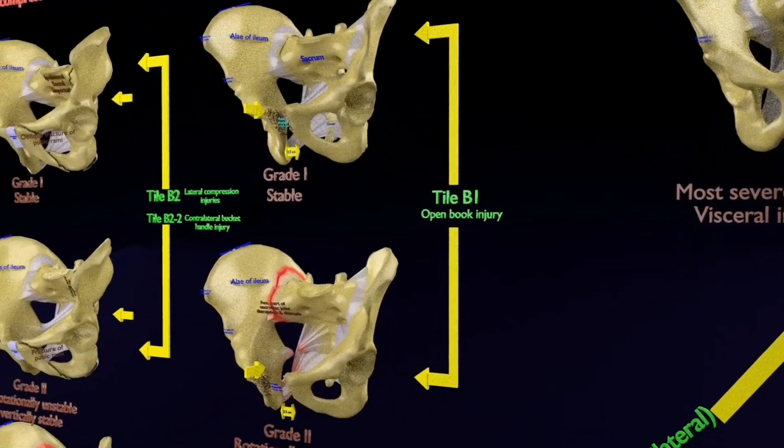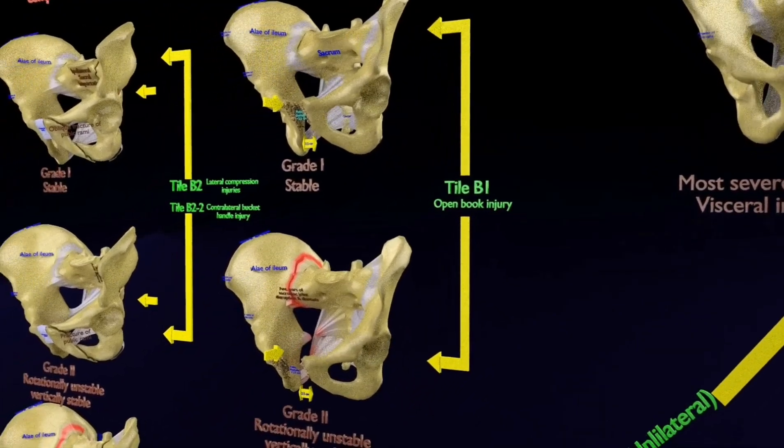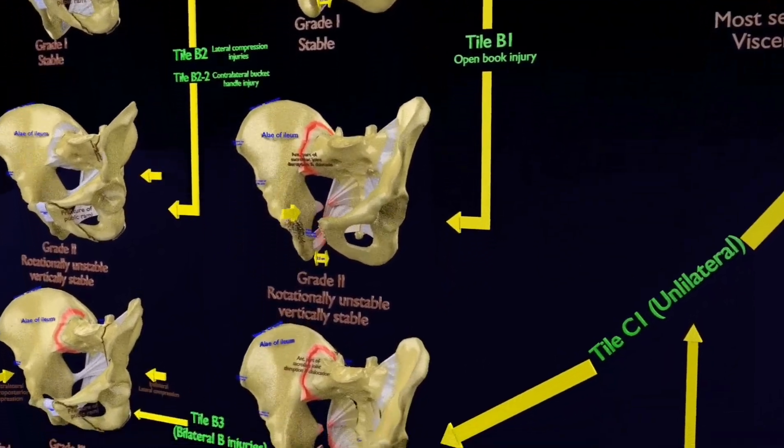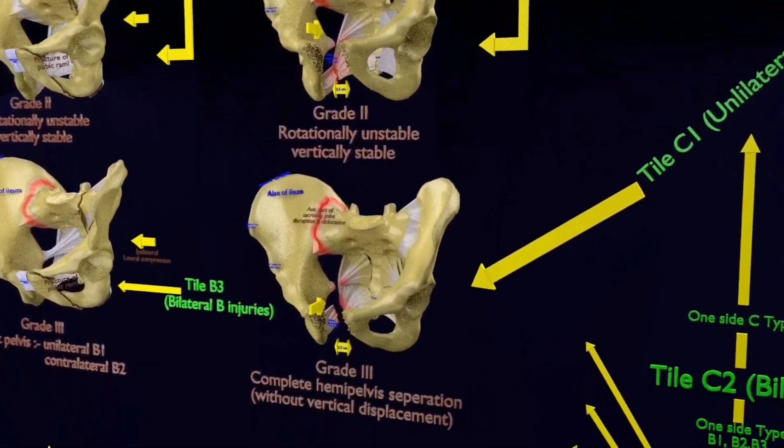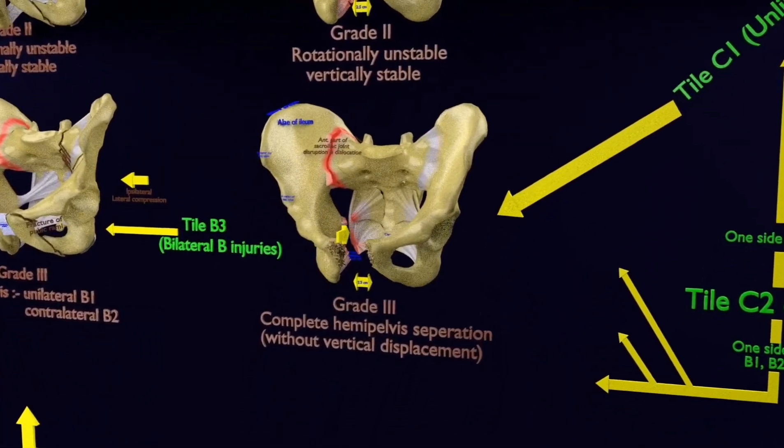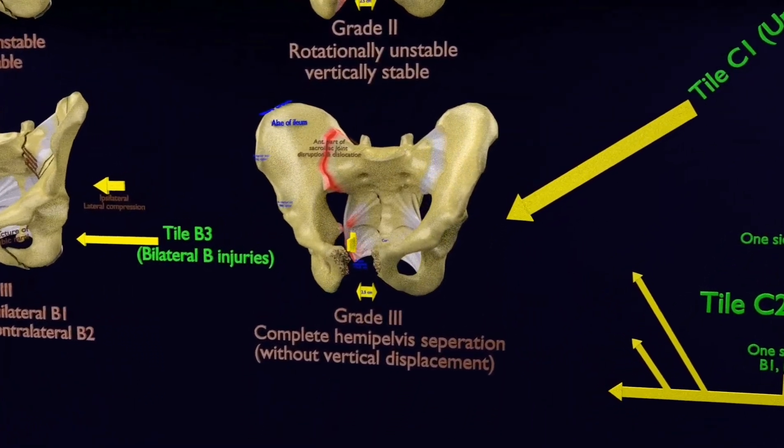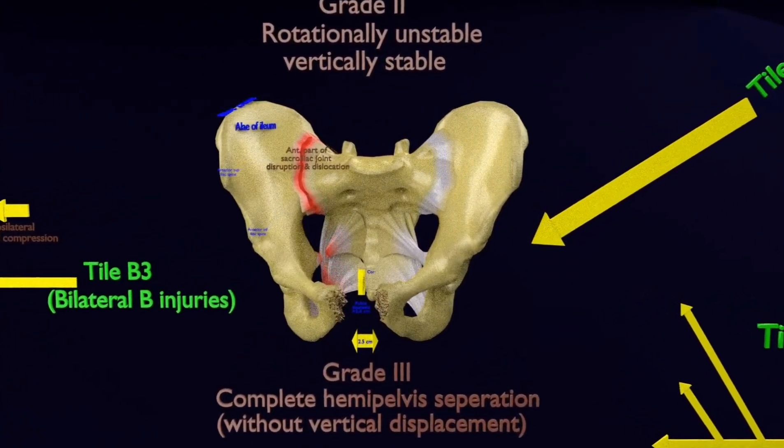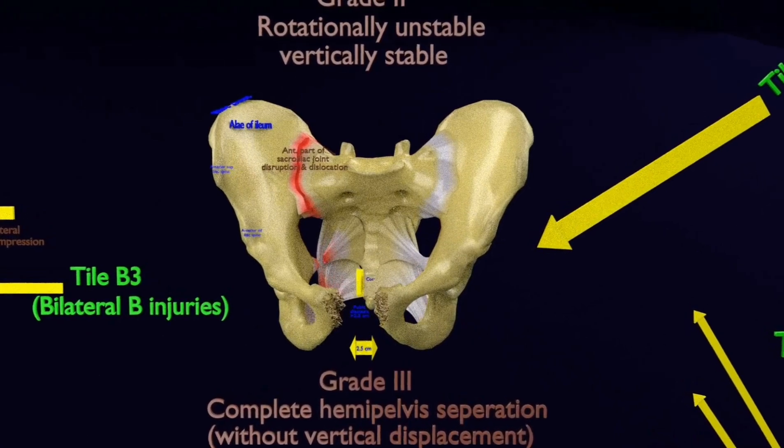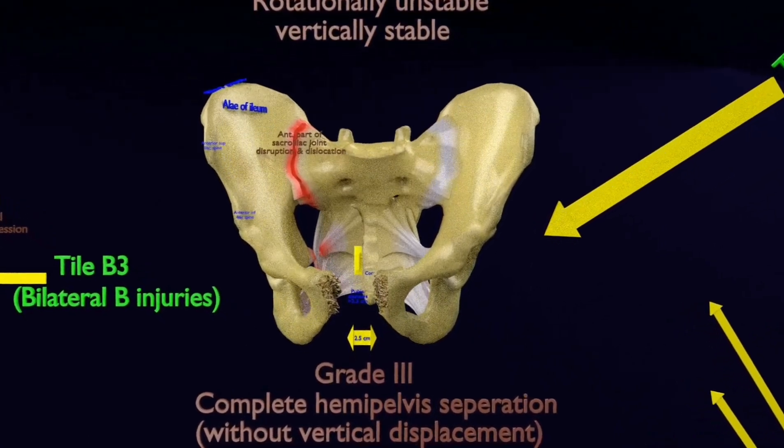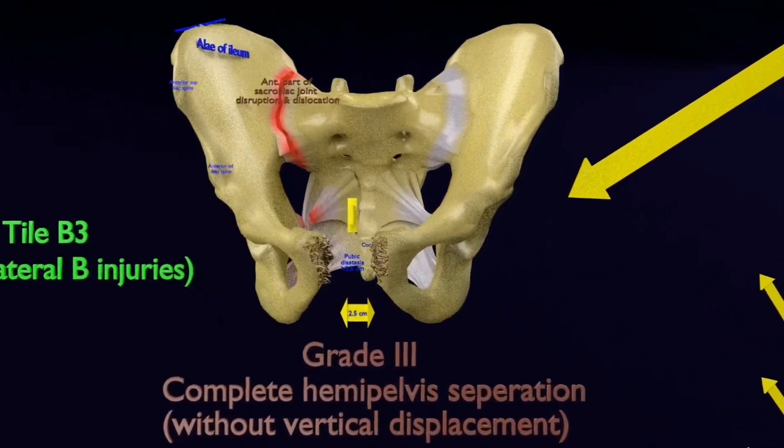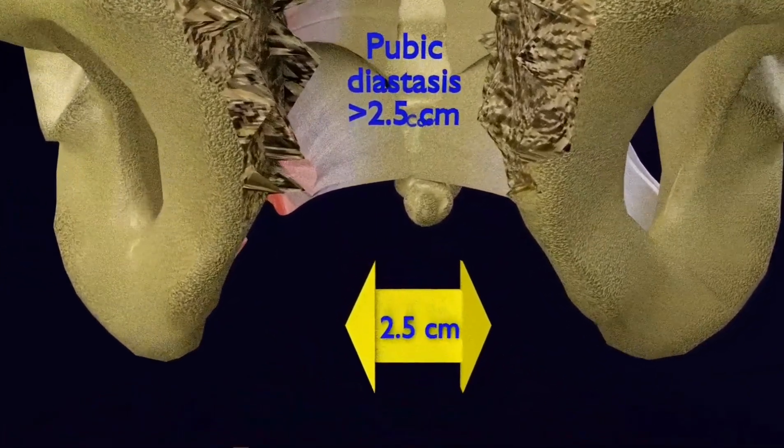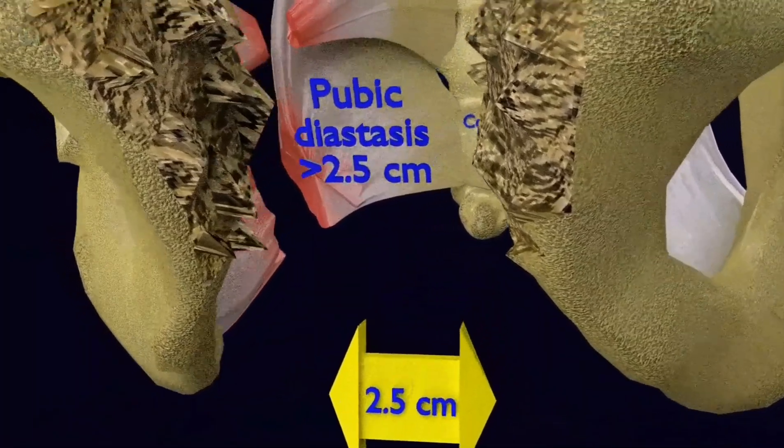The grade 3, it equates to a complete hemipelvis separation but without vertical displacement. It is also unstable. Here you see the pubic diastasis is more than 2.5 cm, and visualize disruption diastasis of both anterior and posterior sacroiliac joint ligaments with dislocation.